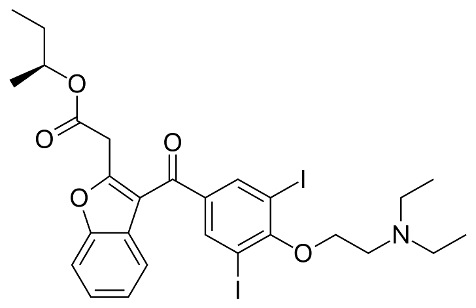Budiodarone only differs in structure from amiodarone through the presence of a sec-butyl acetate side chain at position 2 of the benzofuran moiety. This side chain allows Budiodarone to have a shorter half-life in the body than amiodarone, enabling a faster onset of action and metabolism while still maintaining similar electrophysiological activity. The faster metabolism allows for fewer adverse side effects, principally due to decreased levels of toxicity in the body.